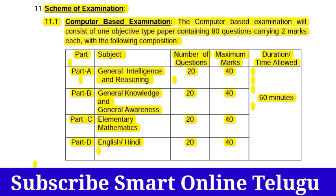The first section is general intelligence and reasoning — there are 20 questions worth 40 marks. The second section is general knowledge and general awareness — also worth 40 marks. The total time allowed is 60 minutes.